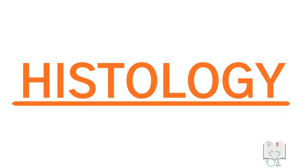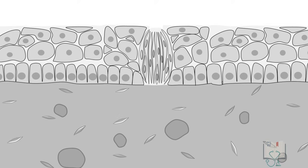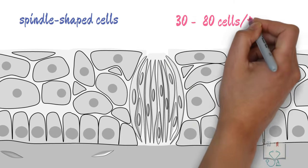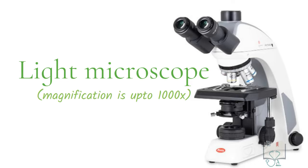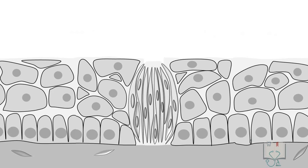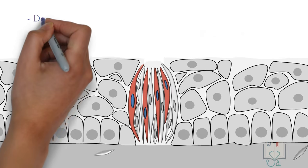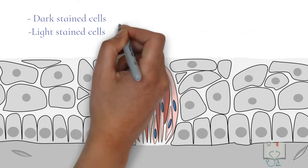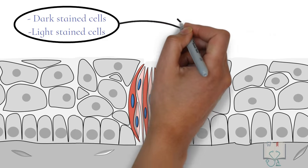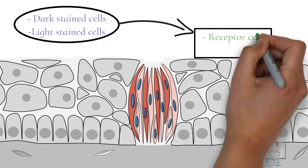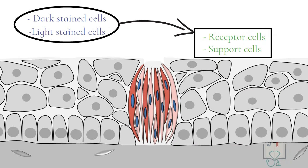Histologically, taste buds contain spindle-shaped cells oriented perpendicular to the surface of the epithelium. One taste bud contains around 30 to 80 cells. When seen under a light microscope, taste buds appear to contain two types of cells: dark stained cells and light stained cells. Some investigators believe these to be two different populations — functional receptor cells and support cells.